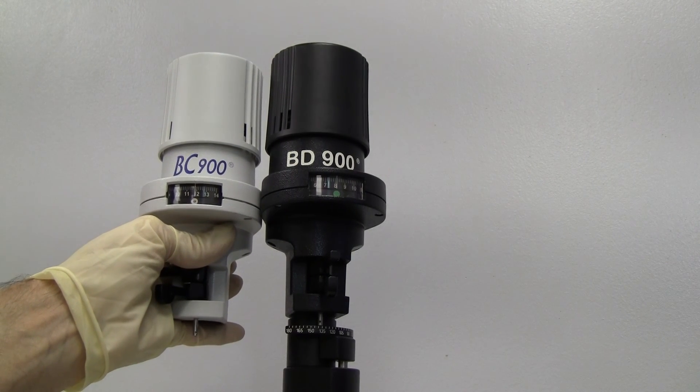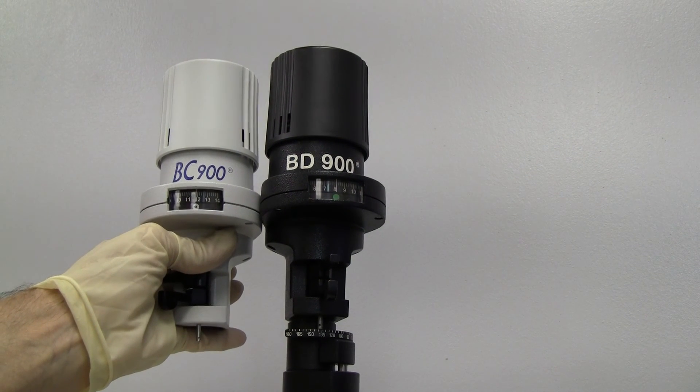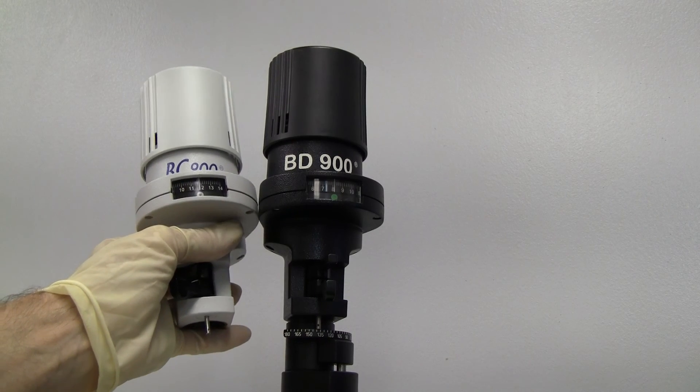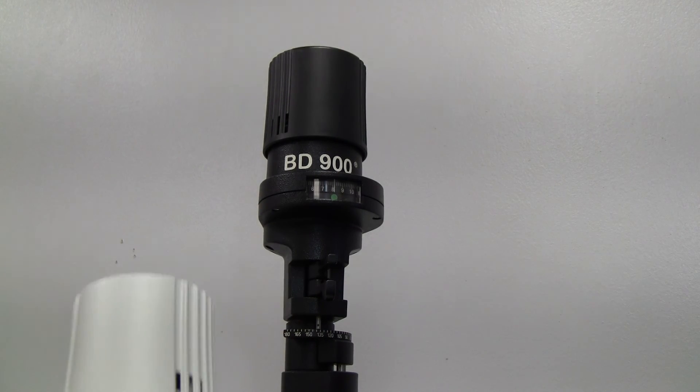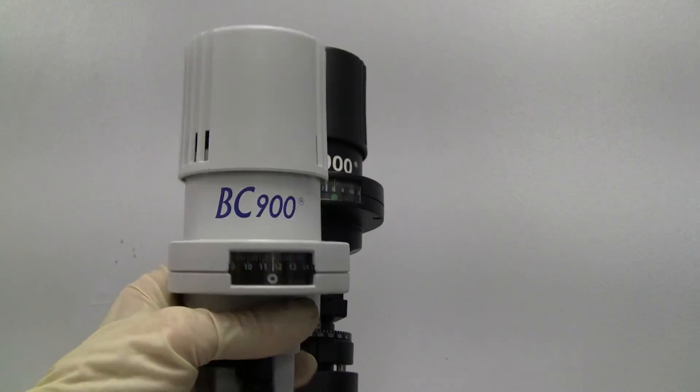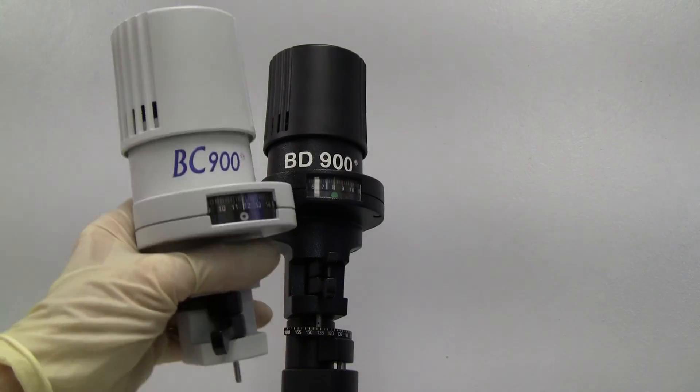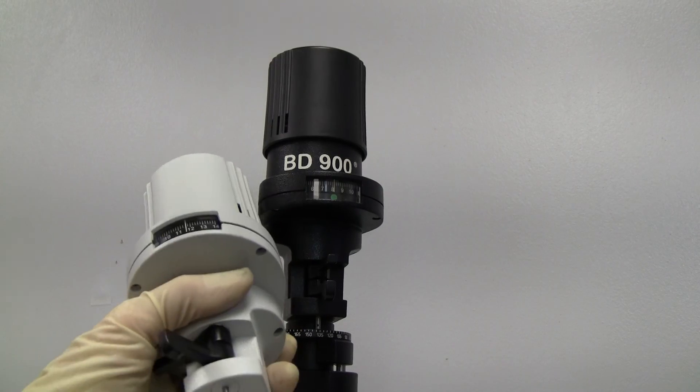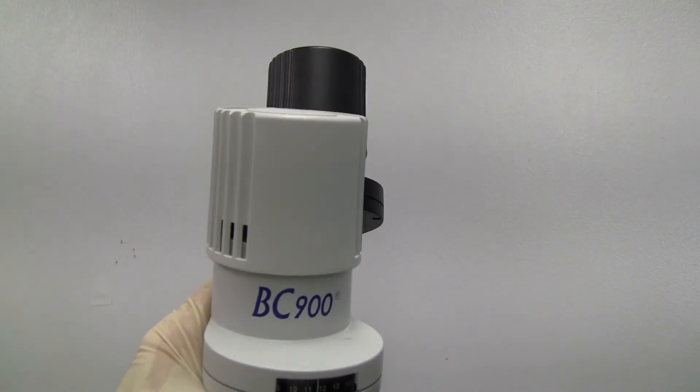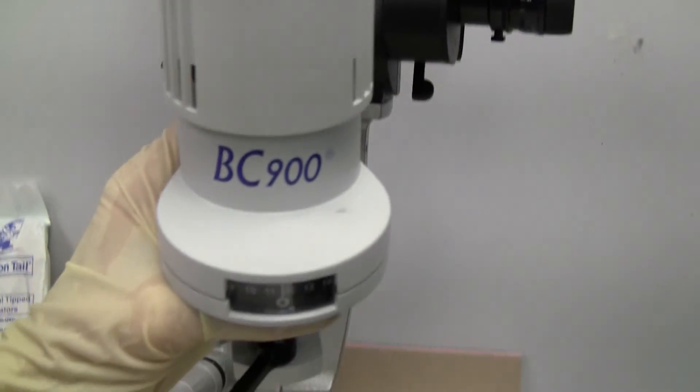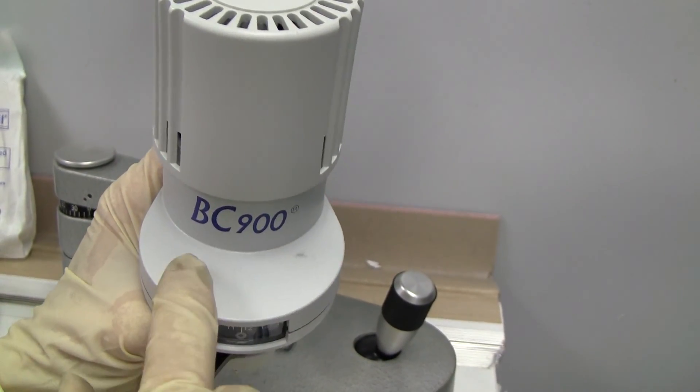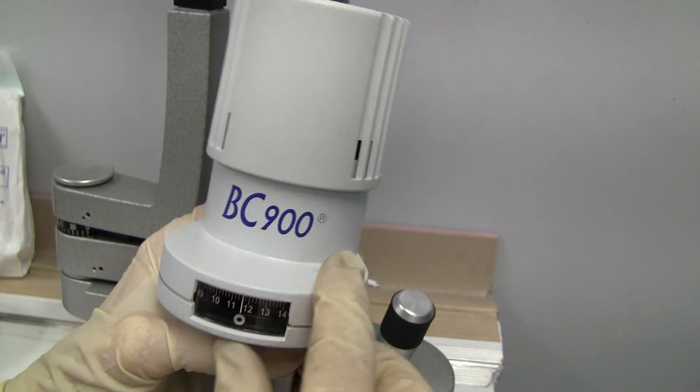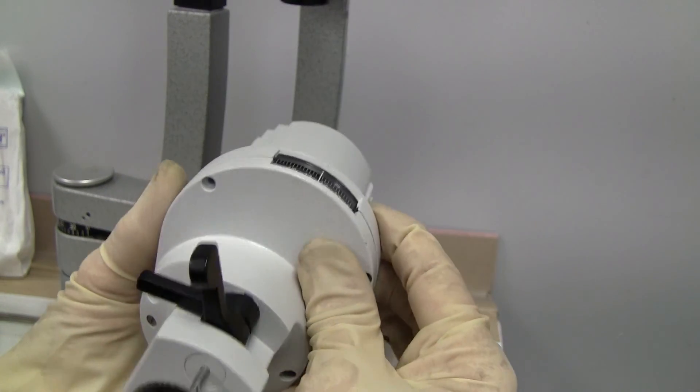On the Haag-Streit BC or BD900, which are pretty similar, we have the upper illumination top hat and it's a little different than the regular BM in that the screws are not on top. Instead, they are on the bottom.